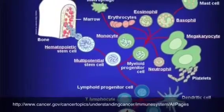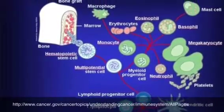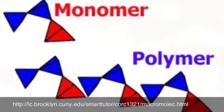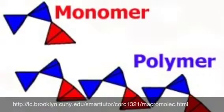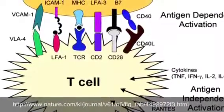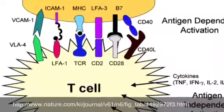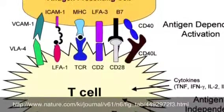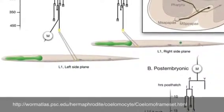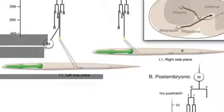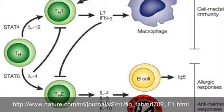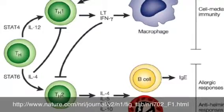Lyse is the destruction of cells and disrupts the cell membrane. A monomer is a molecule that can combine with others of the same kind to form a polymer. A T-independent antigen is an antigen able to trigger B cells to produce antibodies without the presence of T cells. Coelomocytes is a fluid-filled body cavity. A cytokine is a non-antibody protein released by contact of a specific antigen.